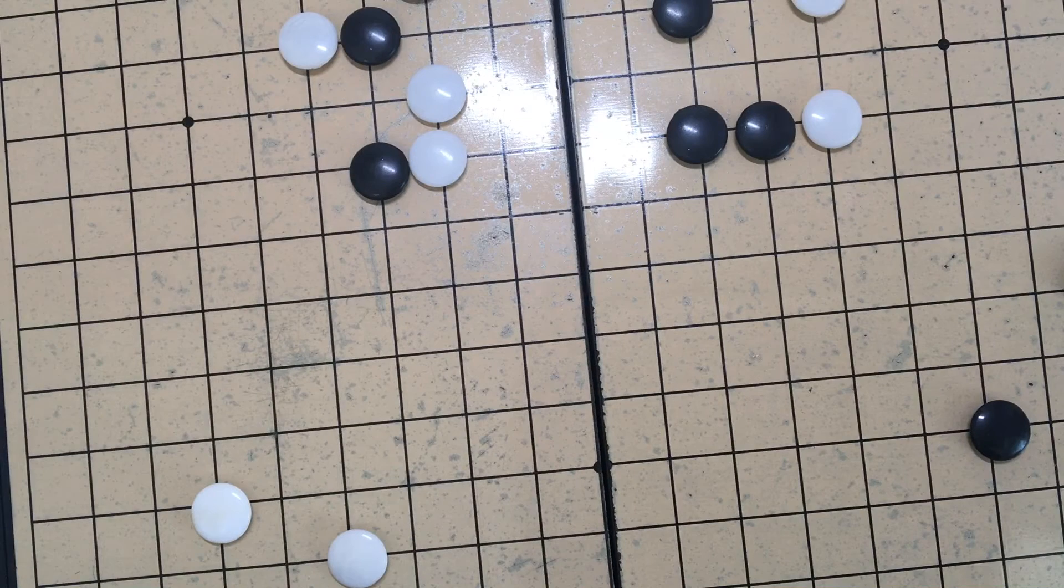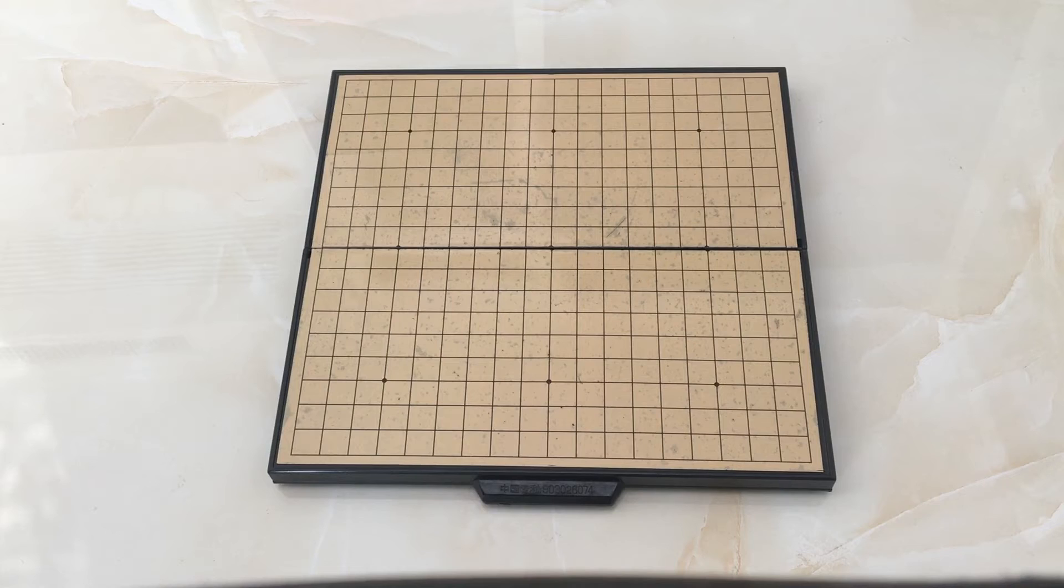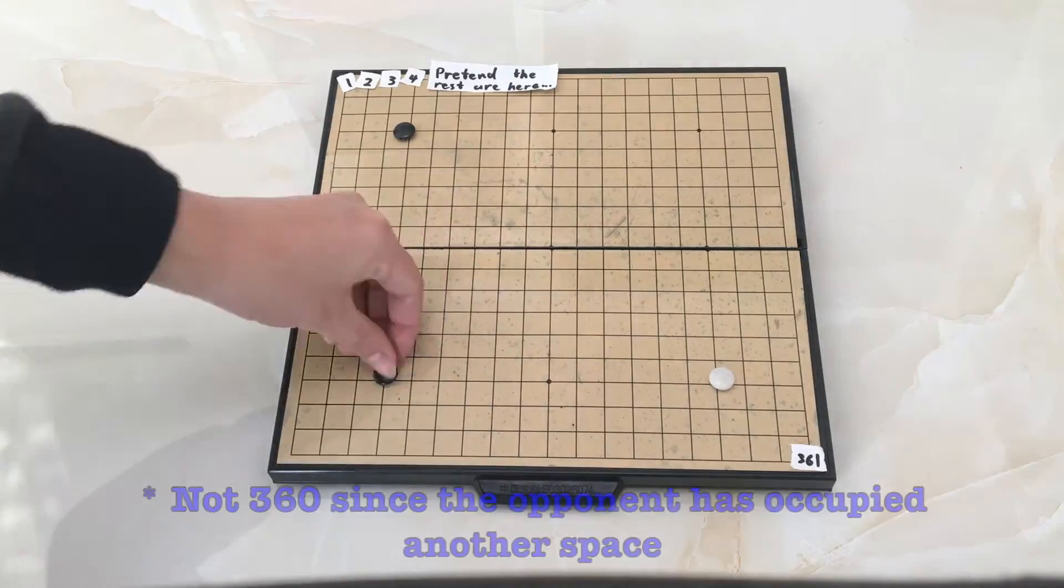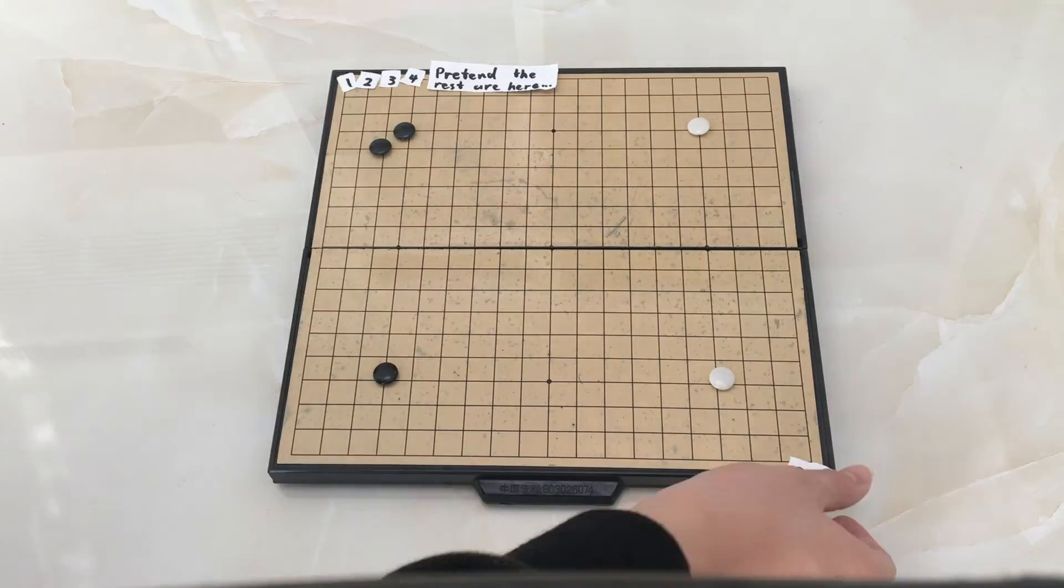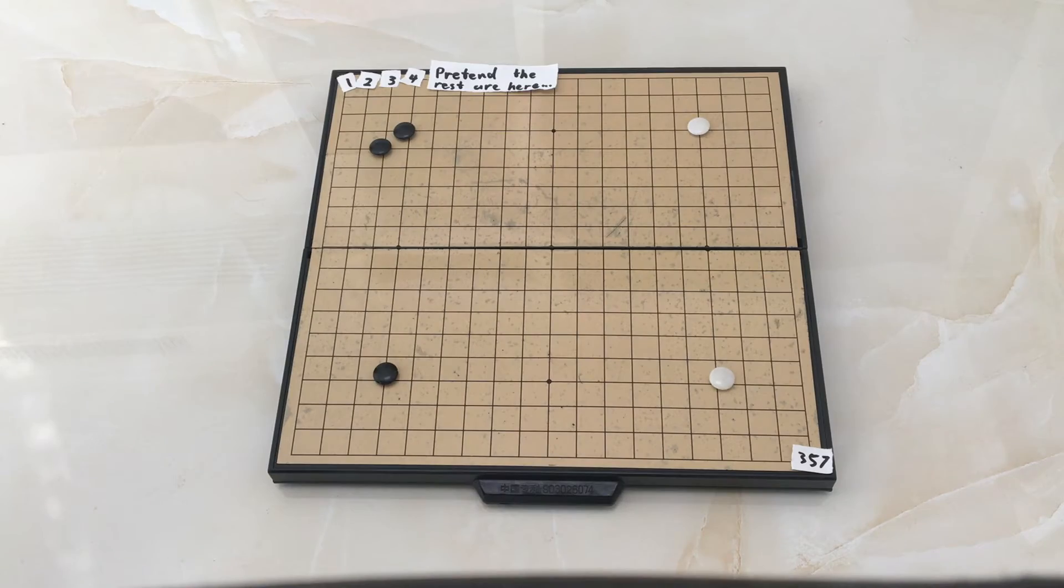But Go is not played on a 2x2 board. On a 19x19 board, the first move has 361 possibilities. For each of these first moves, there are 359 possible second moves, and for each second, 357 third moves, and so on.